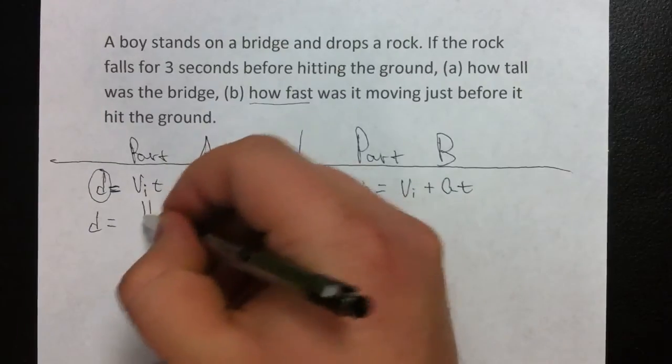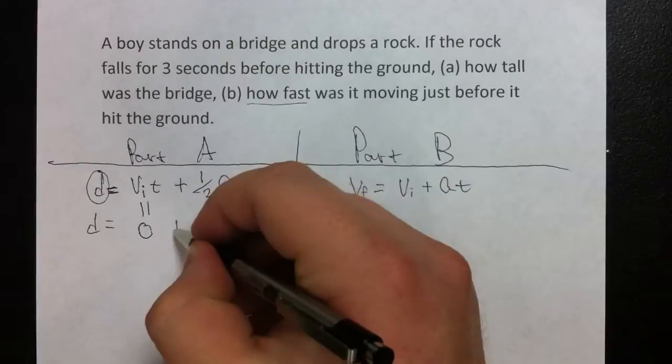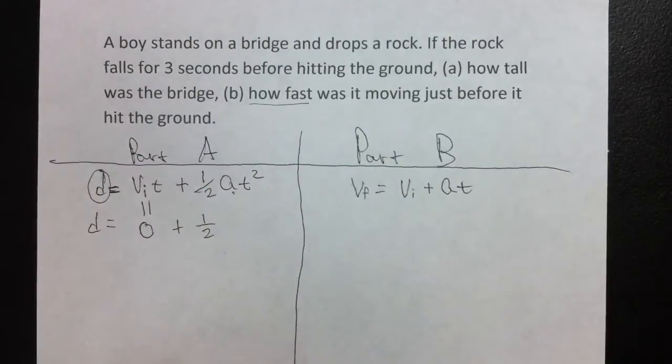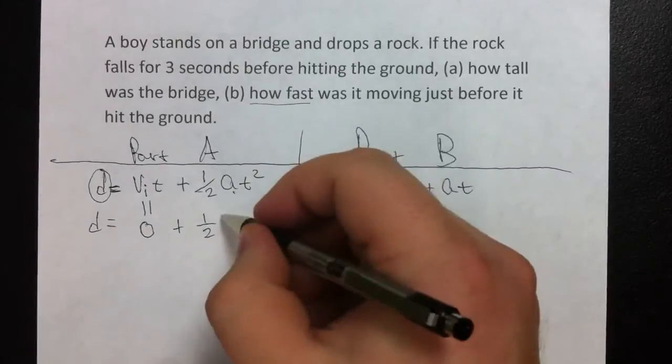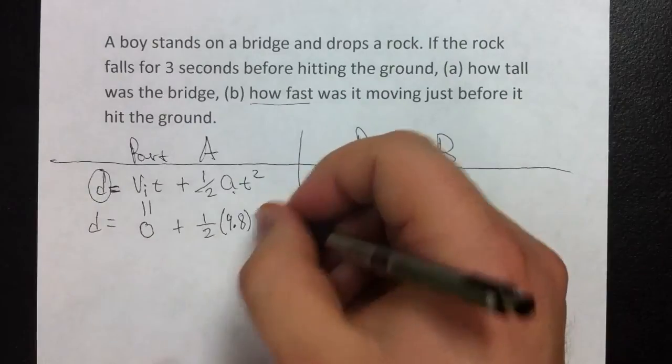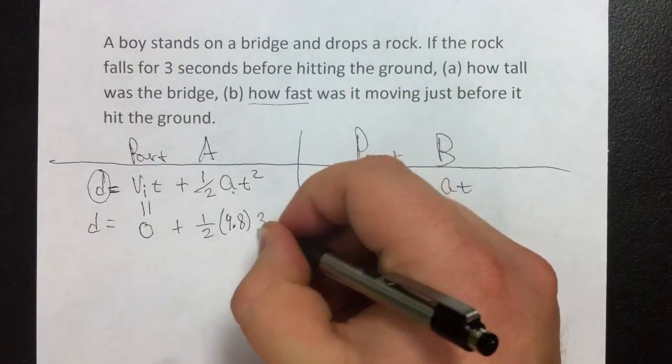So actually, this whole part, zero times time, is obviously zero. Now, when it comes to the acceleration here, the acceleration here is due to gravity. So, we're going to put 9.8. That is our acceleration due to gravity. Then, we add in the time, which is three seconds, and square it.